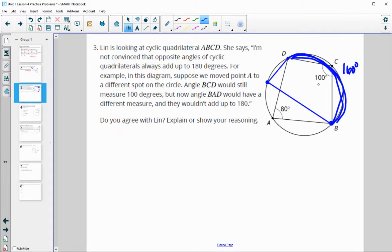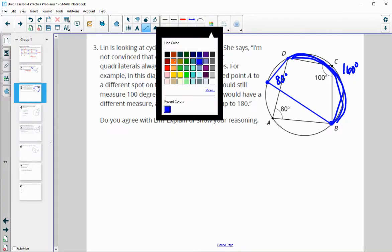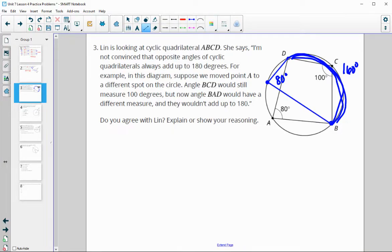And we know that this arc hasn't changed. So in the first case, it was 160, since this is an inscribed angle times 2. So we will still be taking this same arc, B to D, and dividing it by 2 to get this angle. So this will still stay 80, even if we change point A anywhere over here.